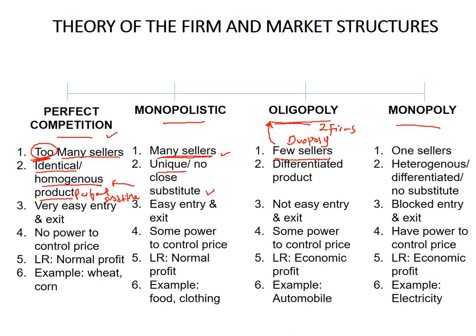Two firms is oligopoly or duopoly. These firms sell items or products which are differentiated from each other. In monopoly, 'mono' means one, so there is only one seller selling a different or heterogeneous product — totally different from others — so there are no competitors, only one seller, and no substitutes.